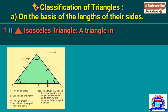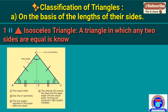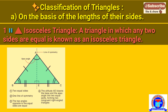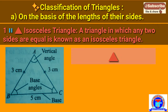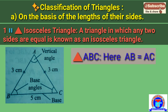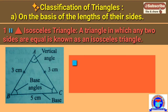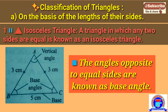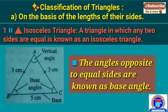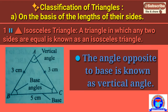The first type is the isosceles triangle. A triangle in which any two sides are equal is known as an isosceles triangle. In triangle ABC, AB and AC are the two equal sides. The third side is called the base, which is BC. The angles opposite to the equal sides are known as base angles, and the angle opposite to the base is known as the vertical angle.